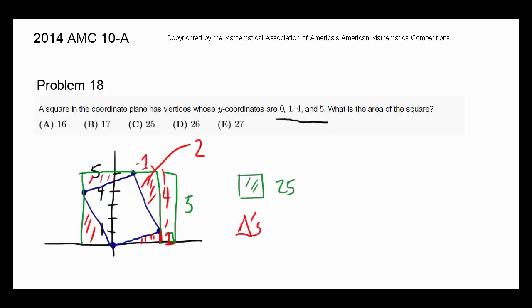And since we have 4 triangles, the area is going to be 2 times 4 or 8. Now what's the area of the blue square? That's going to be 25 minus 8 or 17.